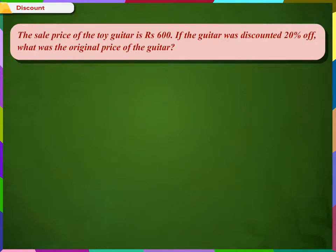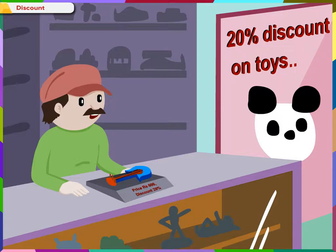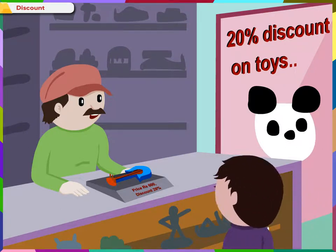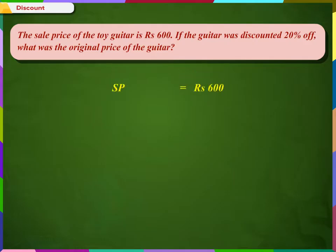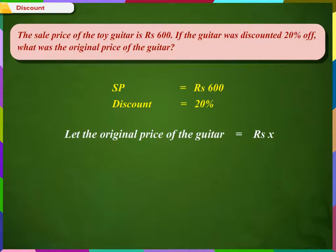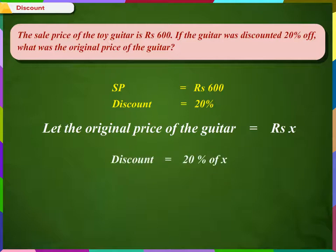Let us solve another problem on discount. The sale price of the toy guitar is Rs. 600. If the guitar was discounted 20% off, what was the original price of the guitar? In this problem we have the selling price which is Rs. 600 and the discount of 20% is offered. Since discount is calculated on the original price but we are not given the original price, we can suppose the original price as Rs. X. So the discount on original price would be 20% of X.